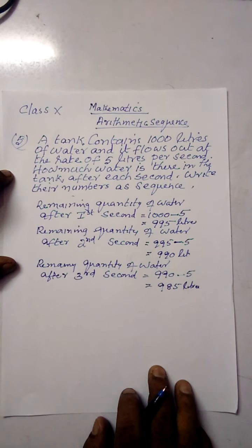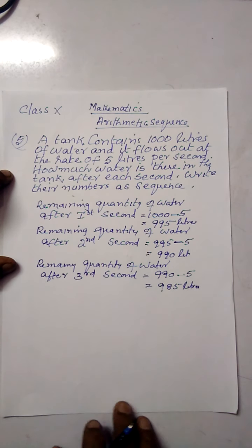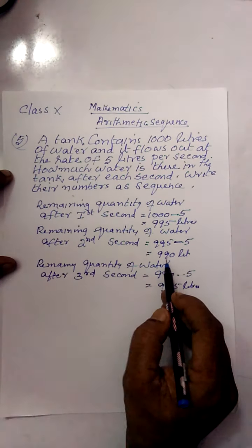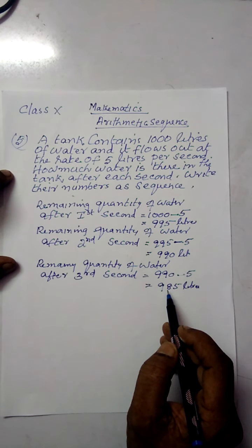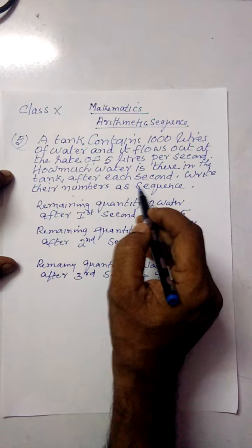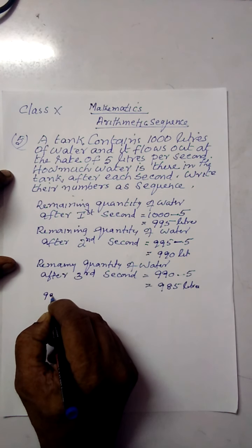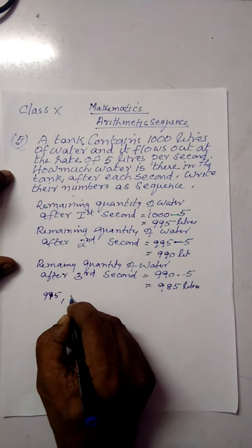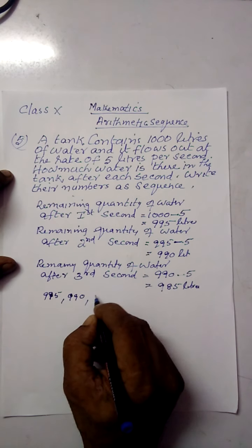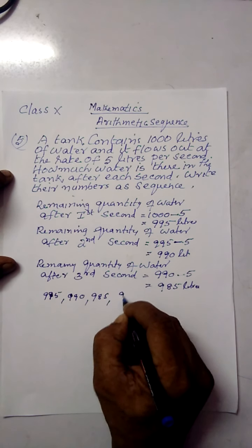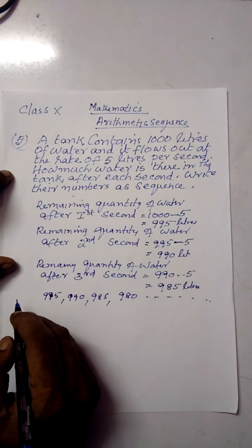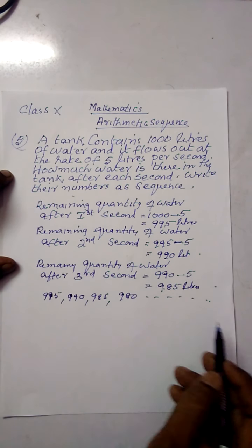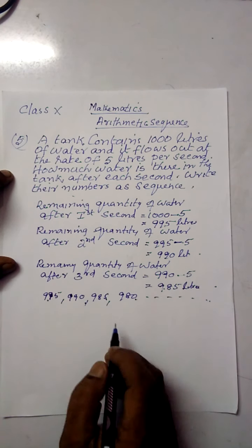It flows out at the rate of 5 liters per second. How much water is there in the tank after each second? After one second: 995, after two seconds: 990, after three seconds: 985, after four seconds: 980. The sequence is 995, 990, 985, 980 and so on.